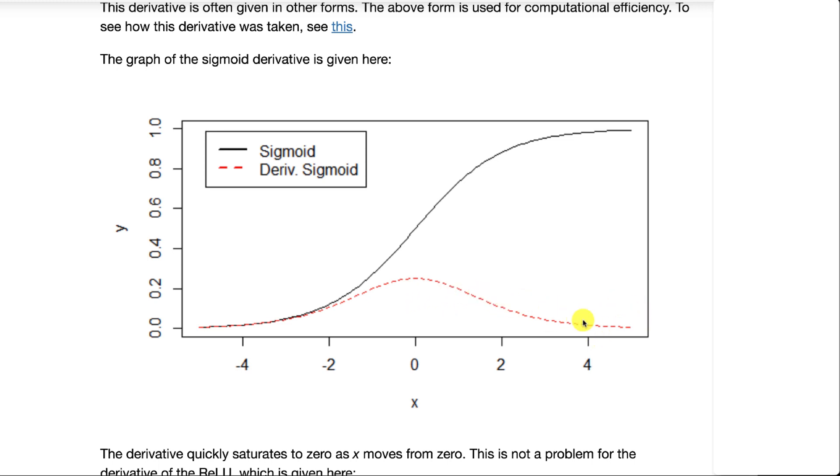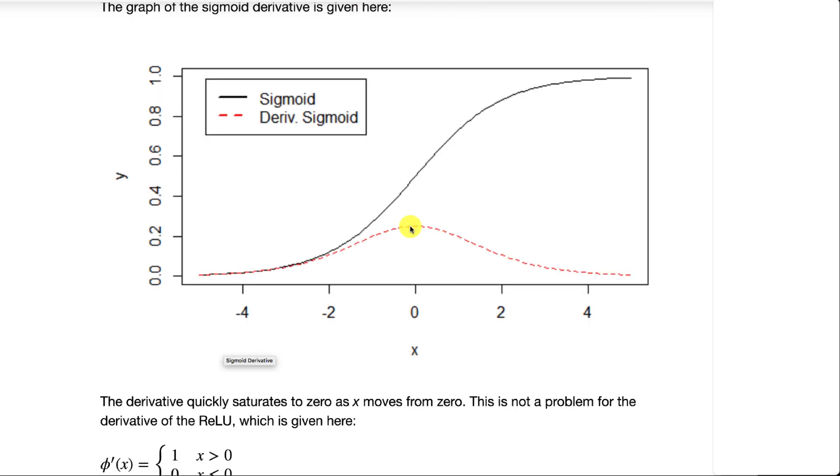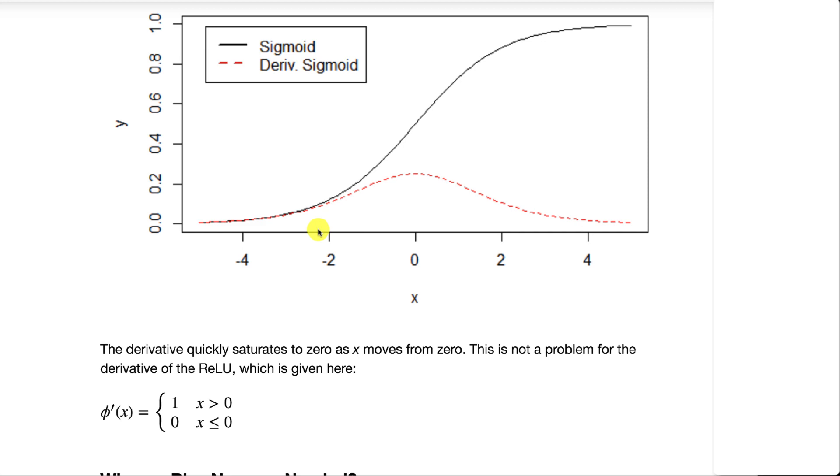Because this saturates to zero, it's not as desirable as the ReLU. The rectified linear unit doesn't saturate to zero like the sigmoid function does in both directions.